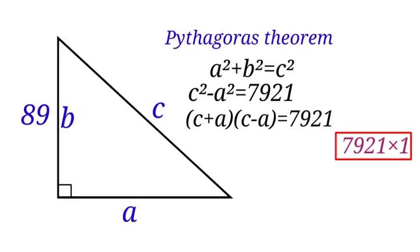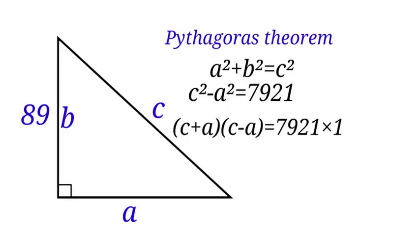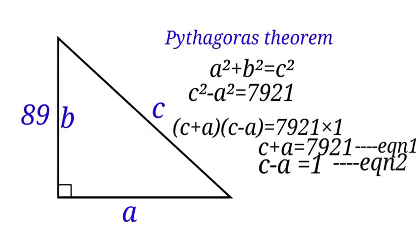Let us write that here. C plus A times C minus A equals to 7,921 times 1. Let us write that in this form. C plus A equals to 7,921, and let's call that equation 1. Then C minus A equals to 1. Let us call that equation 2. We are going to solve this equation simultaneously. Now let us add equation 1 and equation 2.